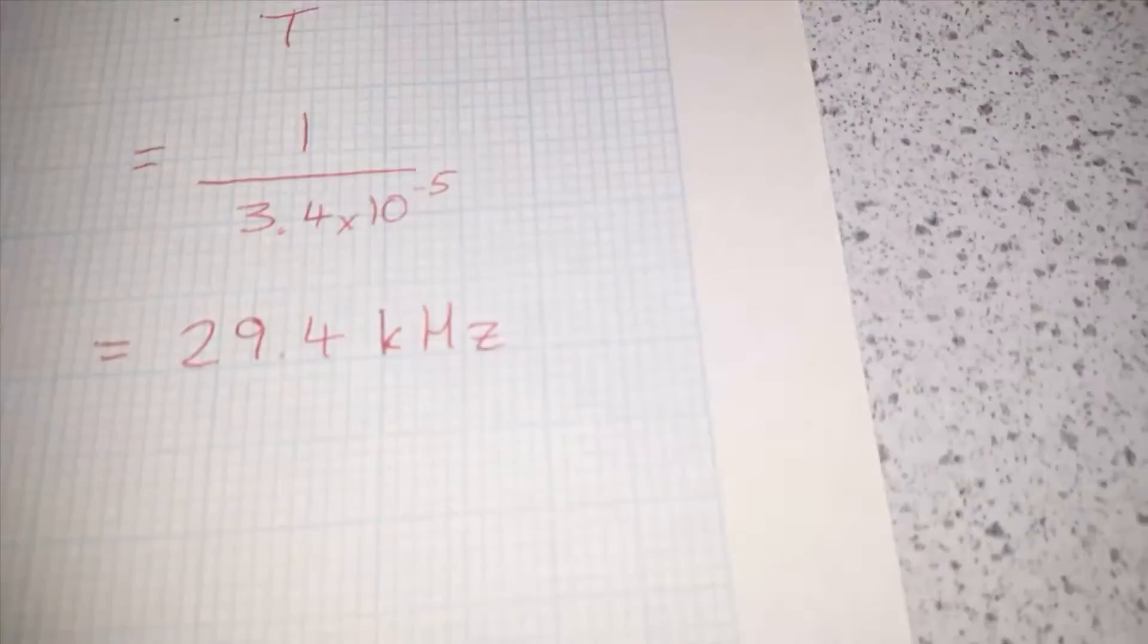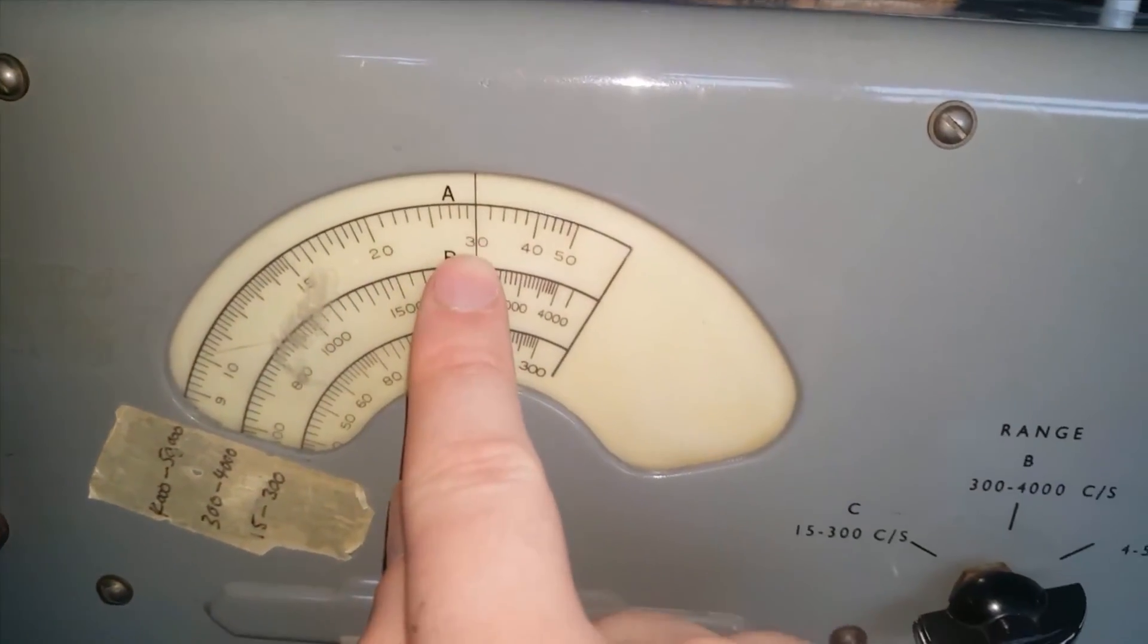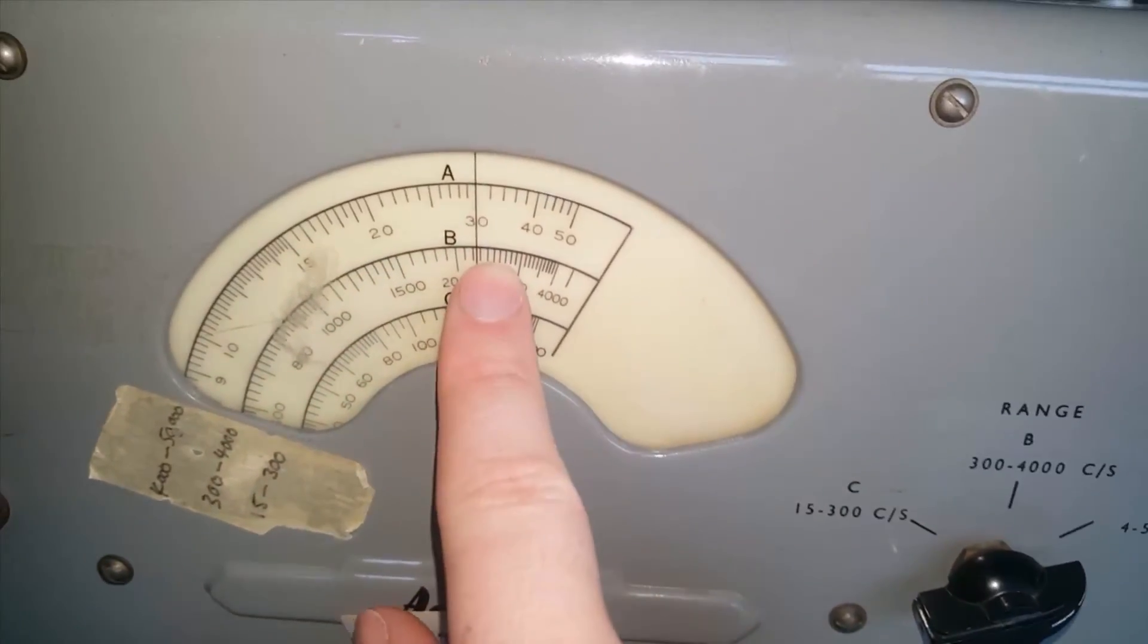So we're certainly on the right scale because we said 29.4 kilohertz. And if we look at the scale we can see we're on 30. So the signal generator says we're producing 30,000 hertz.